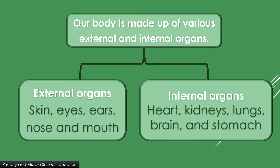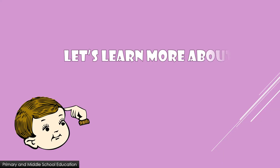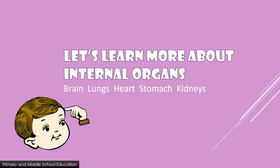Internal organs are the ones that we cannot see as they are present inside our body. For example, heart, kidneys, lungs, brain, and stomach. Let us learn more about the internal organs of our body.